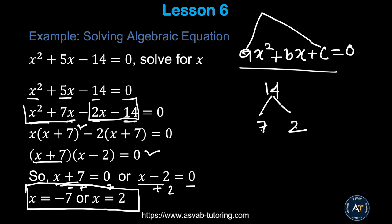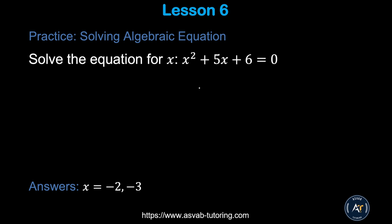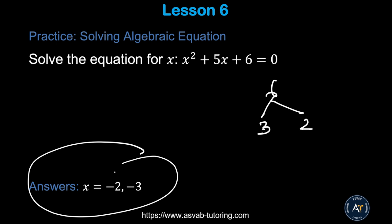You'll see this type of quadratic problem at least once or twice in the actual test. For the practice problem, split 6 into 3 and 2 (3 × 2 = 6, 3 + 2 = 5), factor accordingly, and make sure you get x = −2 and x = −3.